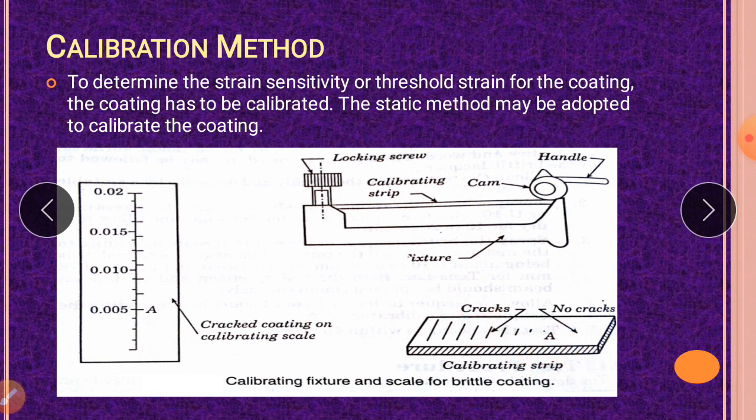We know what is the loading, what is the stress that develops when we apply some amount of loading. So we can easily calibrate that strip with respect to the aluminum bar which is used here. The point on the strip at which the crack commences is marked and represents the section where the strains are equal to the strain sensitivity of the lacquer.